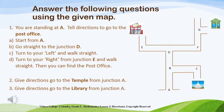Now can you answer the following questions using the given map? Question number 1: You are standing at A. Can you tell directions to go to the post office? First, start from A. Then go straight to Junction D. From Junction D, turn to your left and walk straight to Junction E. Turn to your right from Junction E and walk straight. Then you can find the post office.